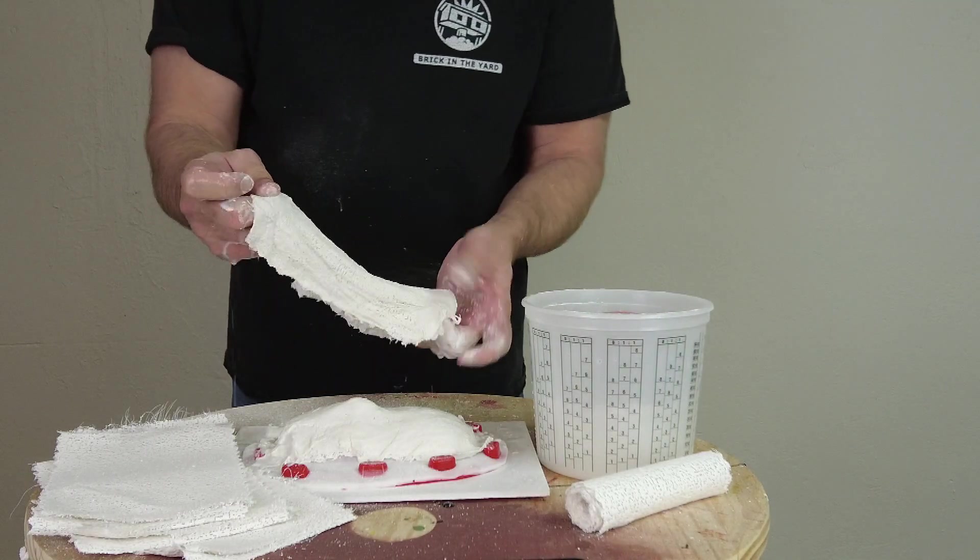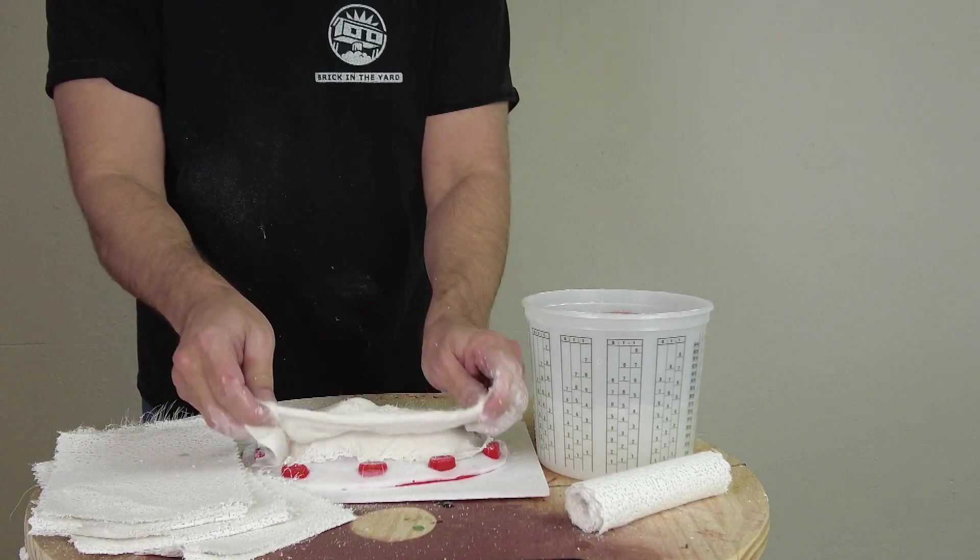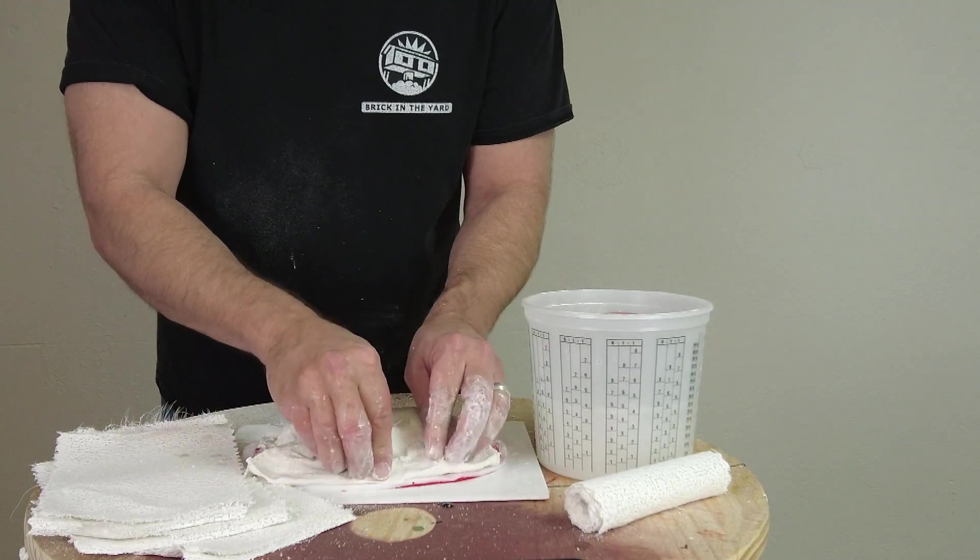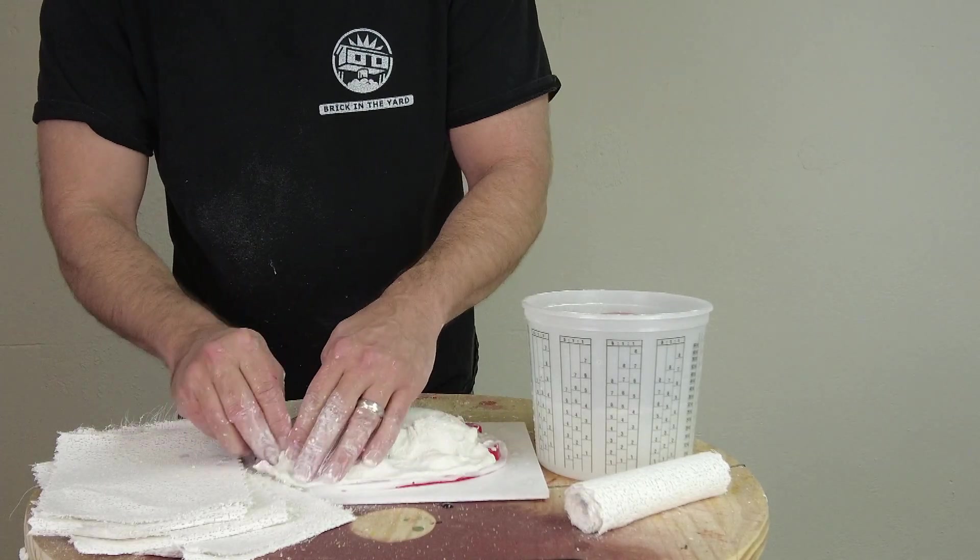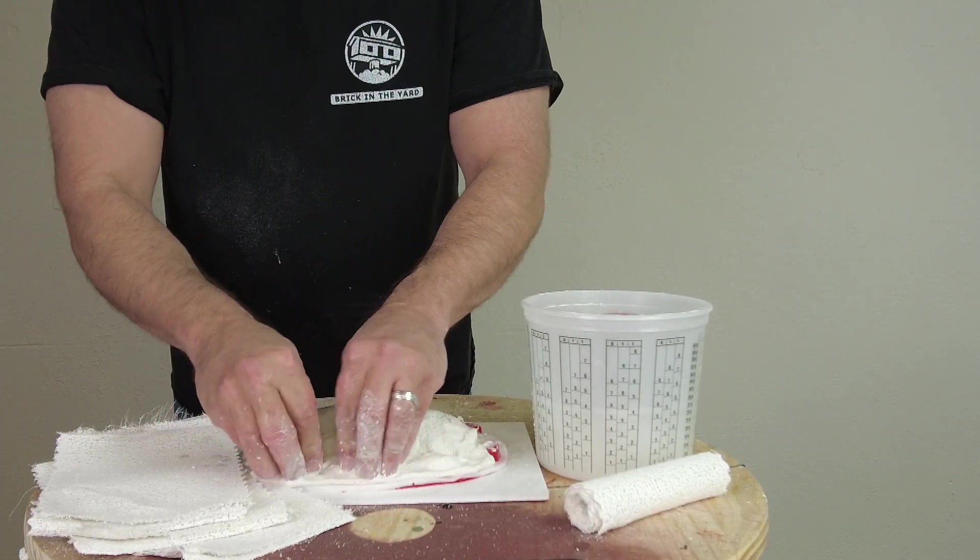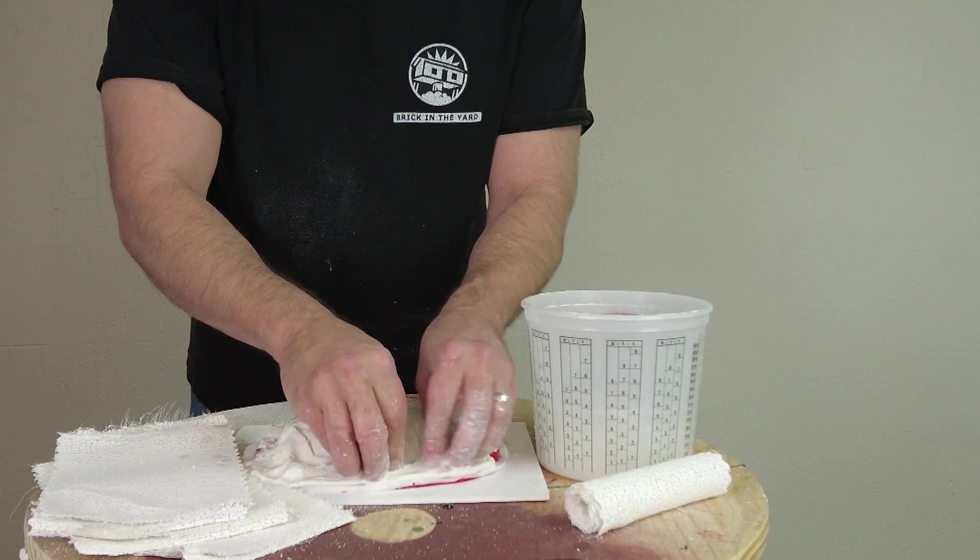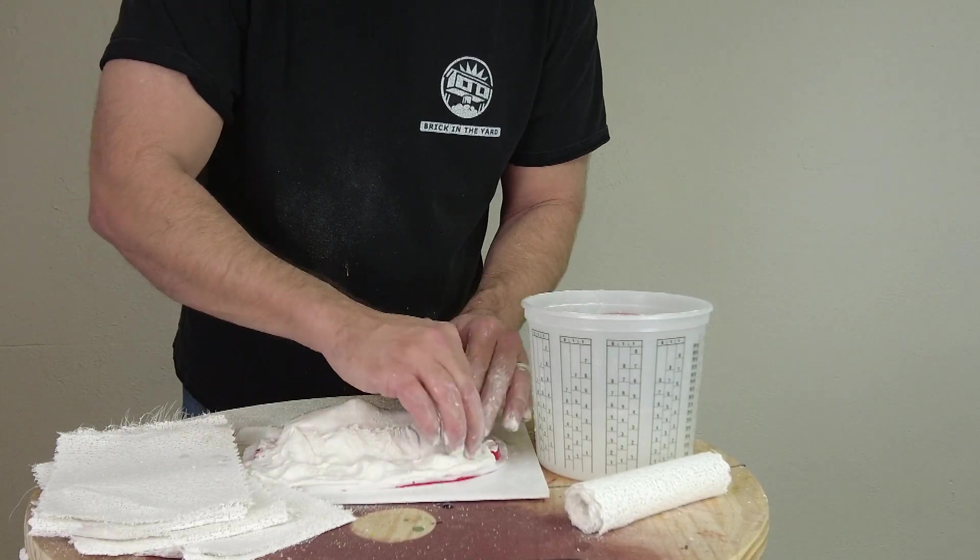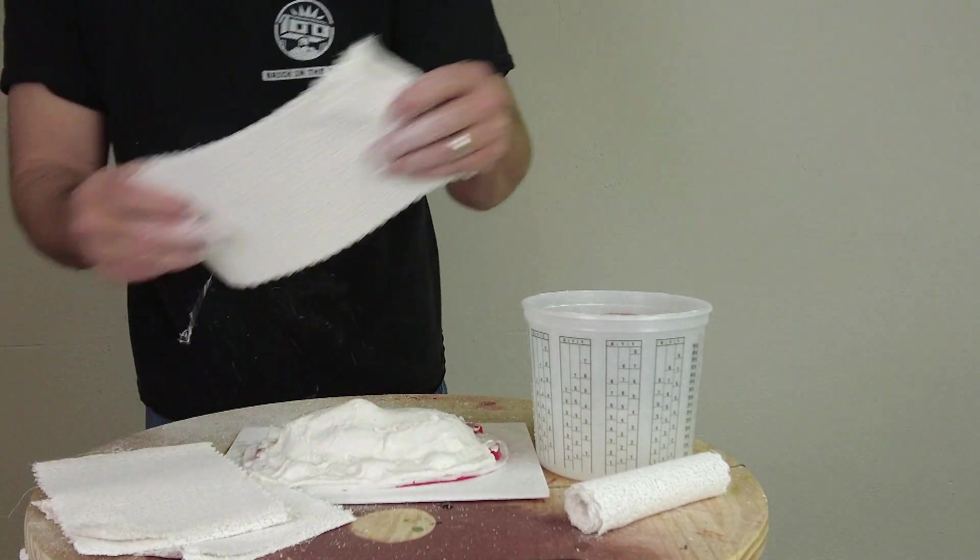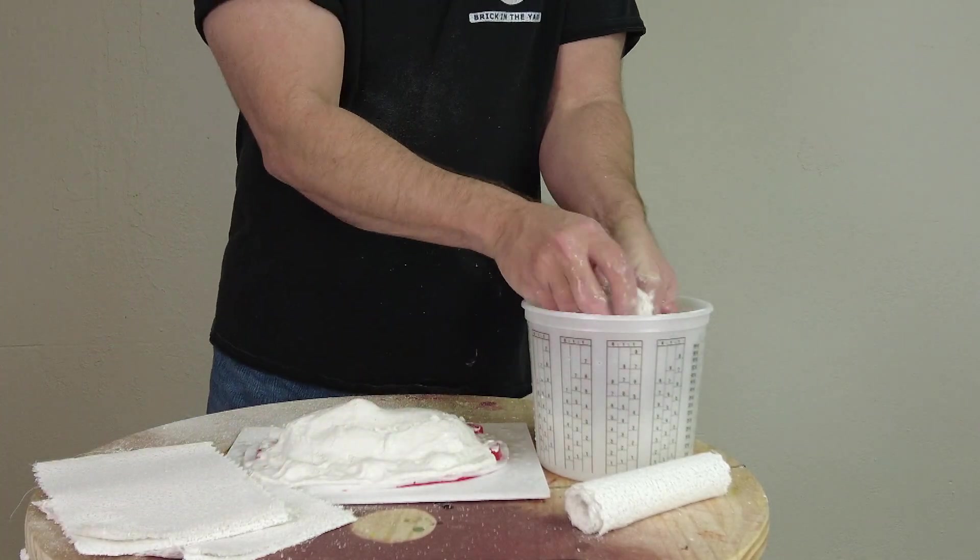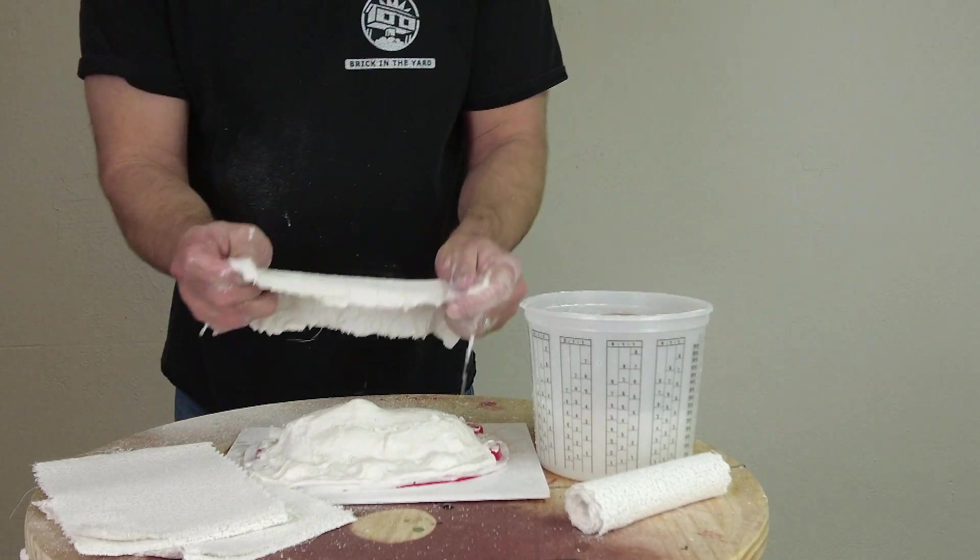One thing I'm doing here, as you see, I'm folding that lengthwise and then pressing it down around those keys. That just ensures that the plaster bandage material seats well on that. Later, once this all sets up, the silicone mold seats into those keys, everything locks up nice, and you get a good positive registration.